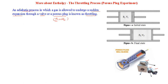One such experiment is the throttling process experiment, or porous plug experiment, which has historical importance because it was through this experiment that so many properties of fluid systems could be identified. Our aim is to understand what happens to the quantity known as enthalpy before and after throttling — whether there is an effect on the enthalpy of the system.